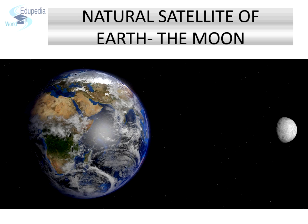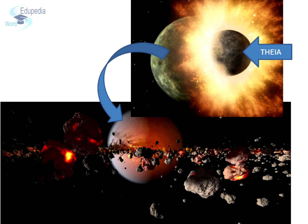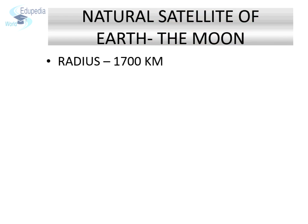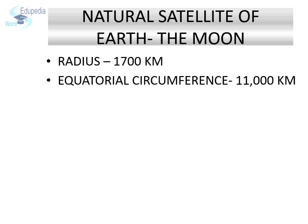Our Moon. Moon is the only natural satellite of Earth. It is believed to have formed by the debris which came out of Earth's collision with another celestial body of nearly the size of Mars called Thea. Moon has always been an integral part of human life since time immemorial. The moon is among the large satellites of our solar system. It has a radius of nearly 1700 km and an equatorial circumference of close to 11,000 km.